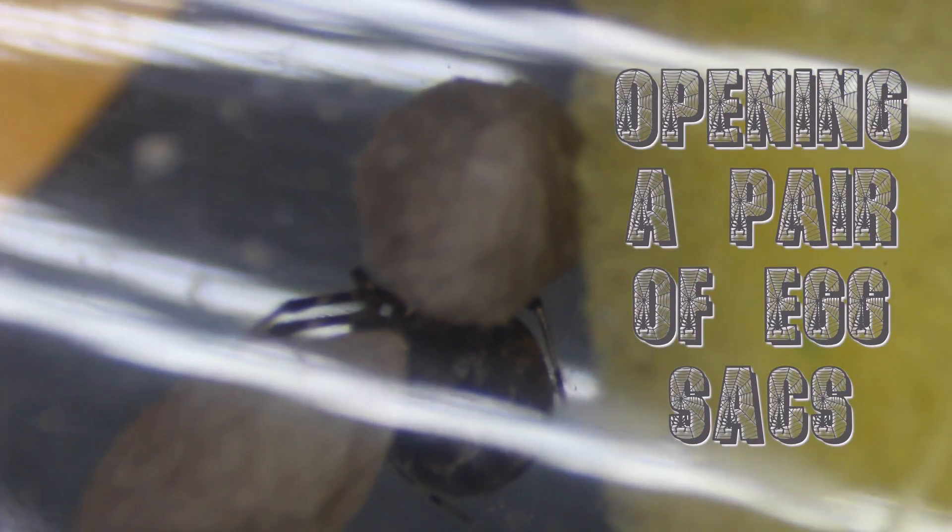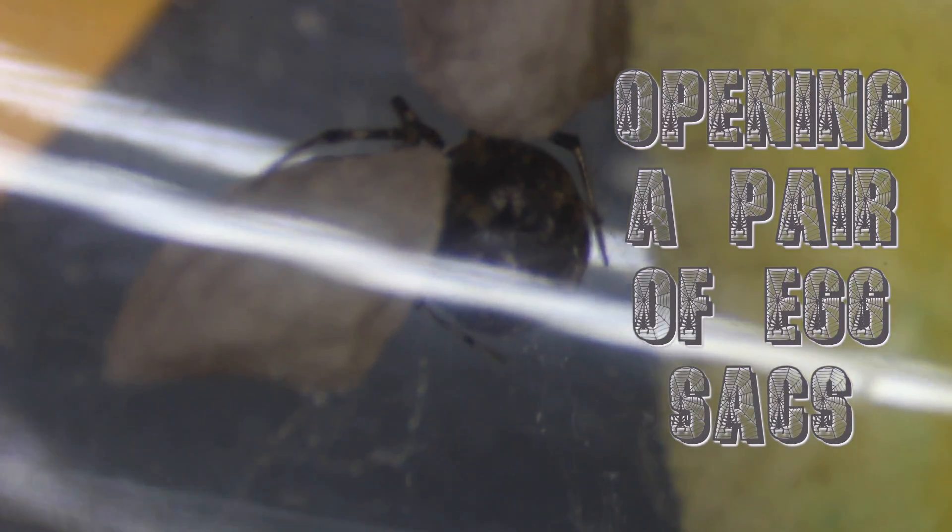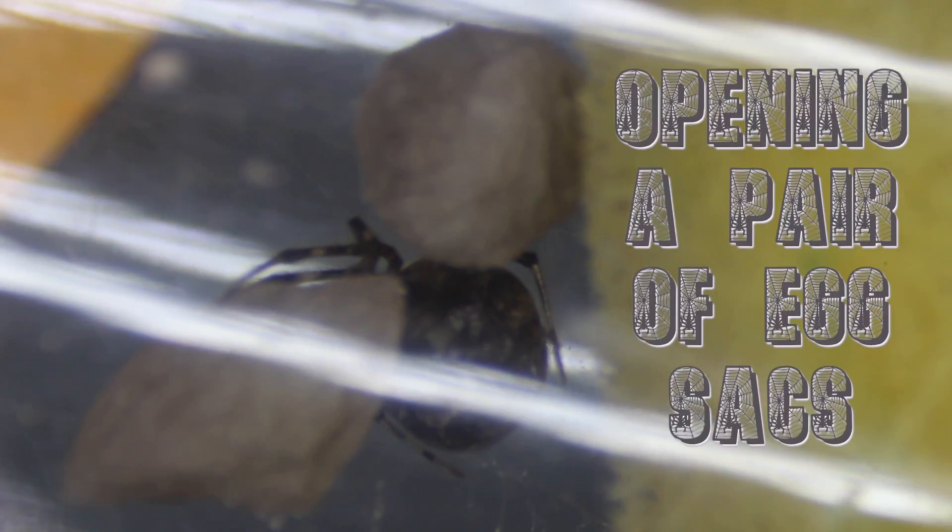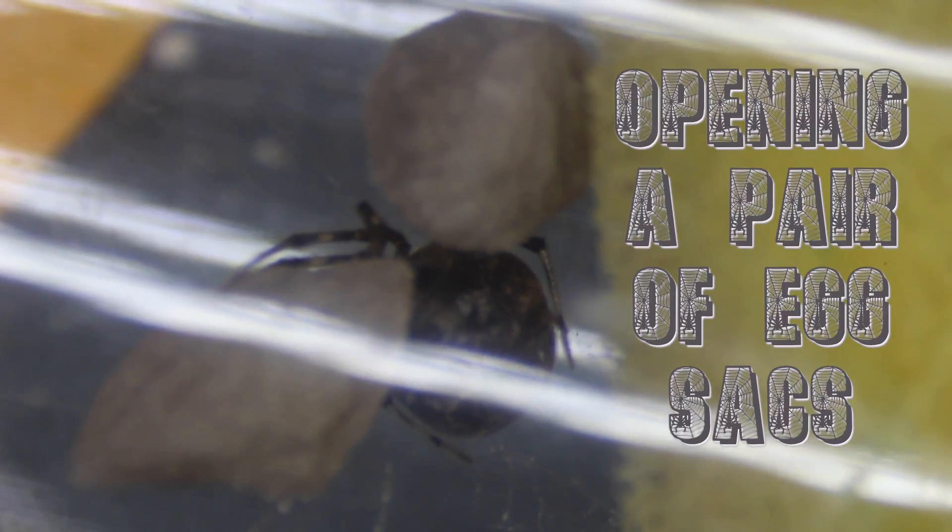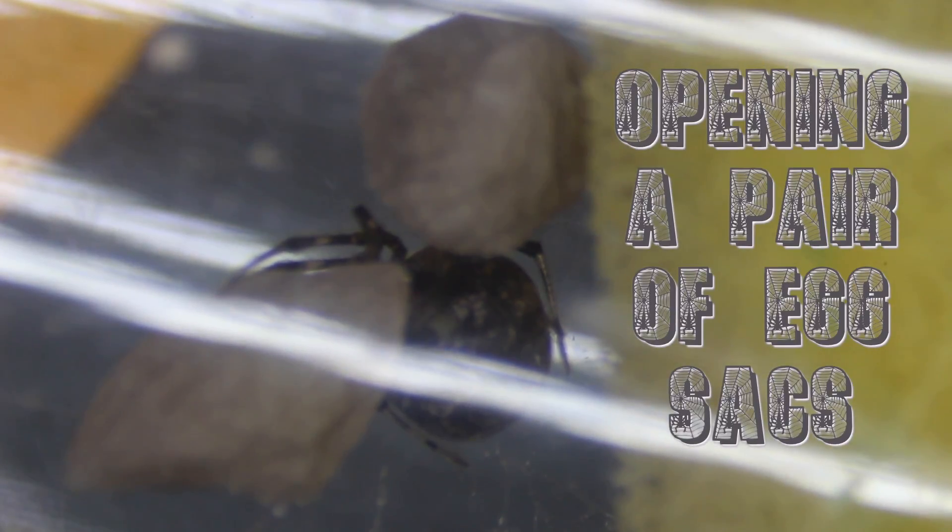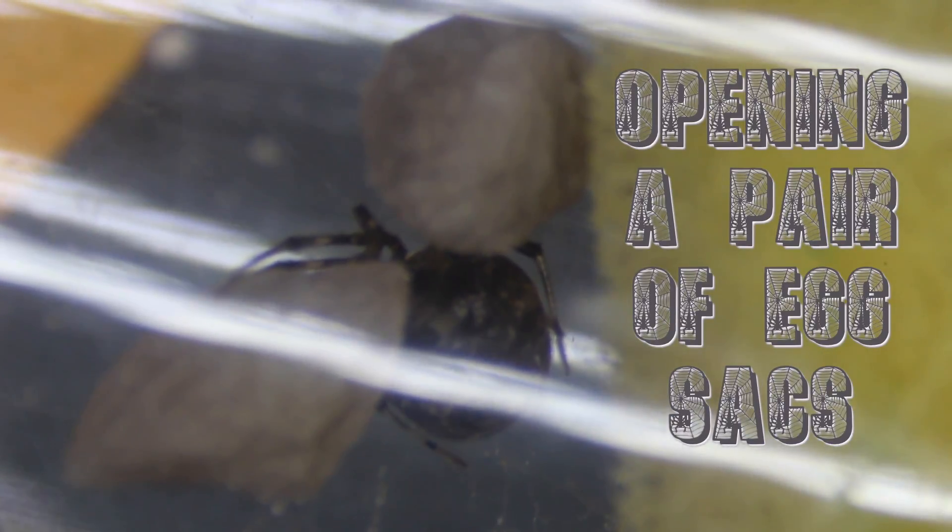She has produced two egg sacs in there, which is actually a little bit annoying. So I've been dating when they make egg sacs to try and figure out how long it takes for them to develop. And I didn't separate her from her egg sac and I can't tell those two apart. I don't know which one came first.